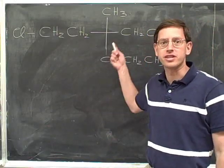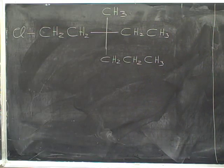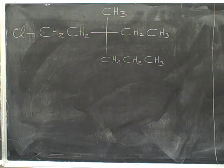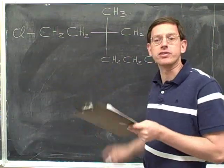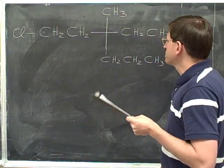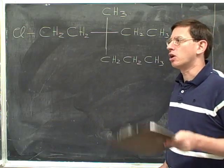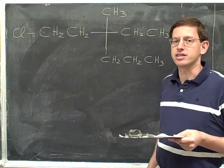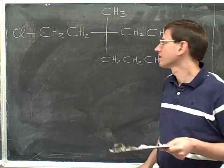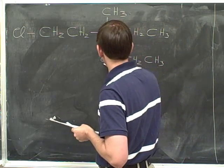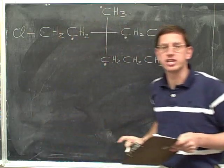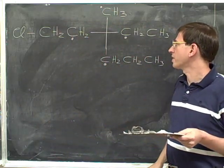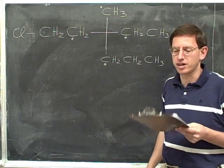Try to assign the priorities for this stereocenter. I hope that you paused the video and gave that a shot, and now we can go through it together. First of all, remember that we begin by focusing only on the atoms that are directly connected to the stereocenter, and we can mark all of those with a dot. Those dots remind us that those are the four atoms we are comparing right now.